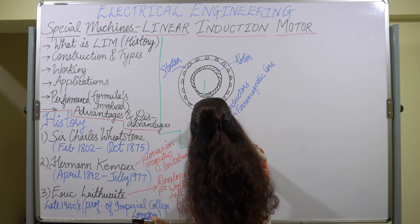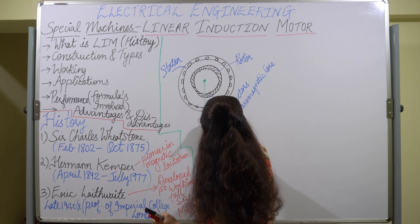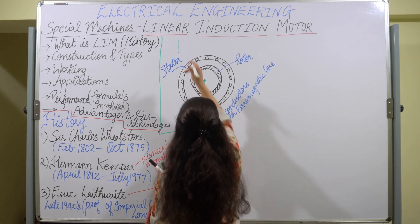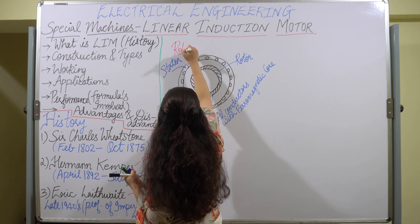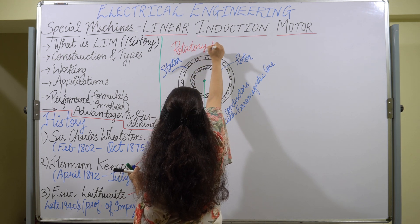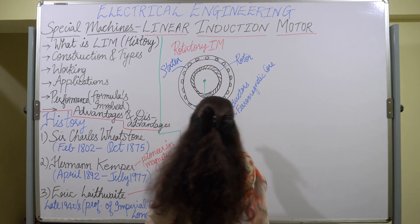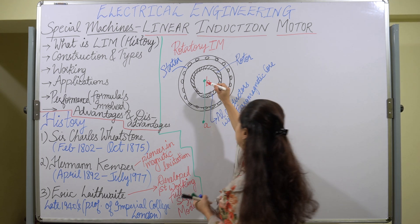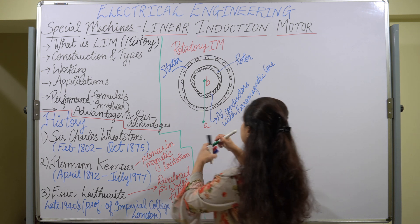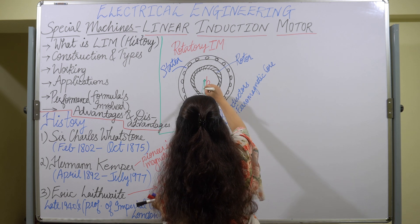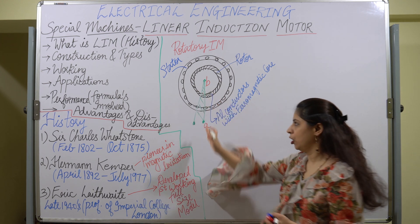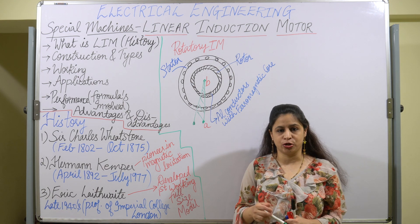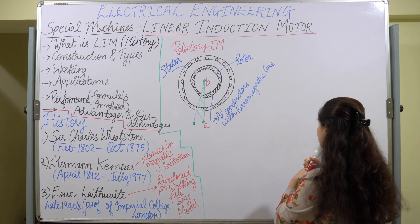If we cut this rotatory induction motor along two points A and B, make a cut along here and stretch it — flatten it out — then we get the linear induction motor. Let us now draw the figure for the linear induction motor.